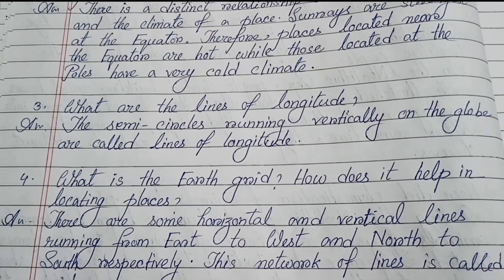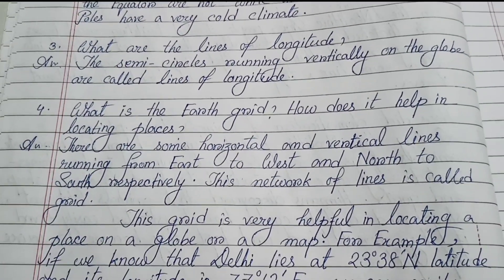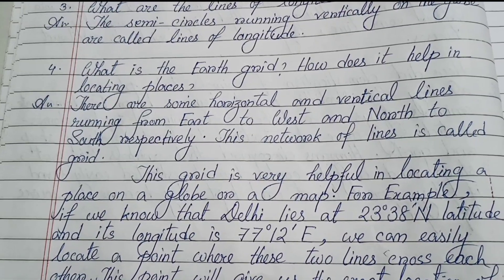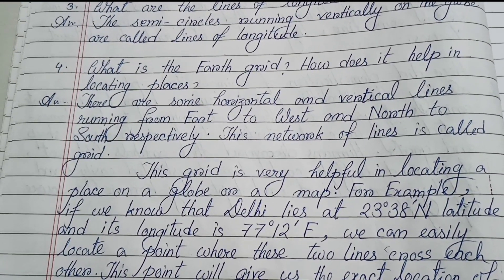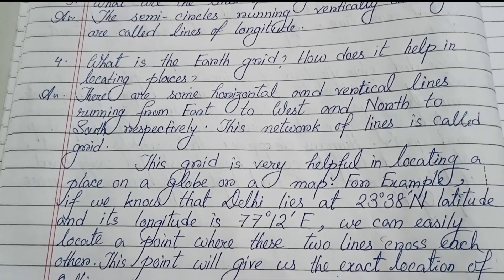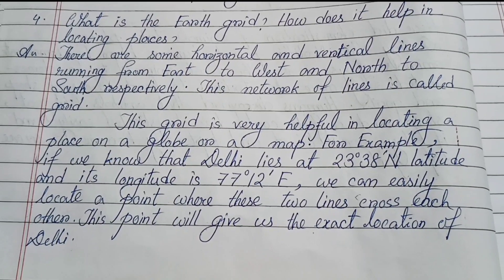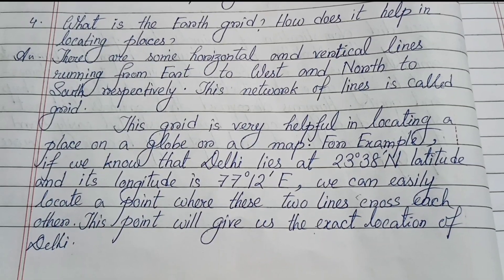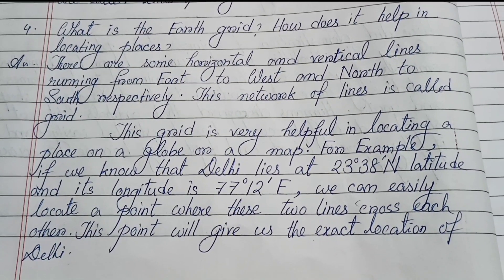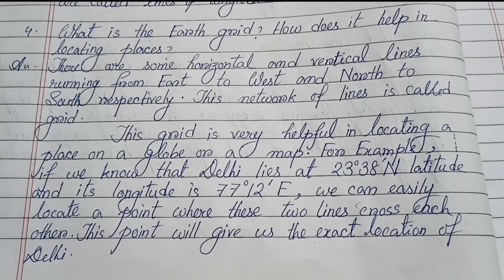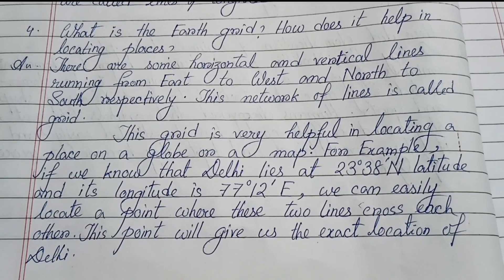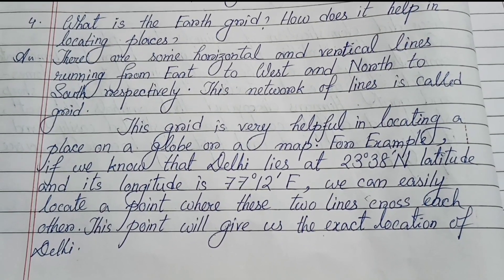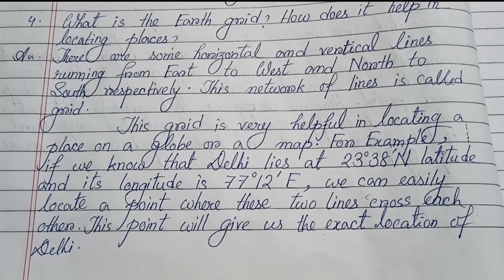Question 3: What are the lines of longitude? The semicircles running vertically on the globe are called lines of longitude. Question 4: What is the Earth grid and how does it help in locating places? There are horizontal and vertical lines running east to west and north to south respectively. This network of lines is called a grid. The grid is very helpful in locating a place on a globe or map. For example, Delhi lies at 23°38' north latitude and 77°12' east longitude — we can locate the exact point where these two lines cross.